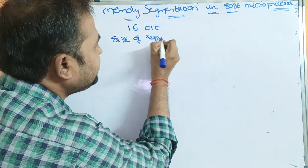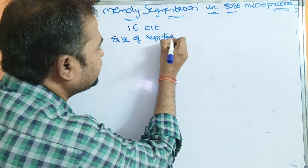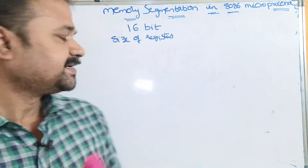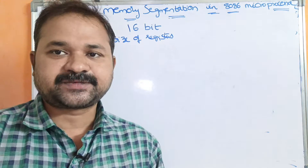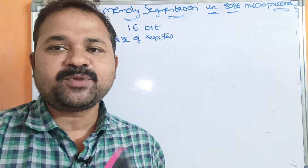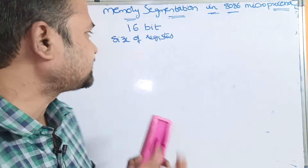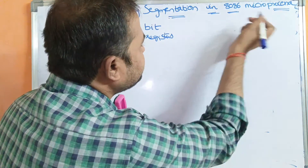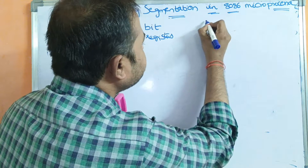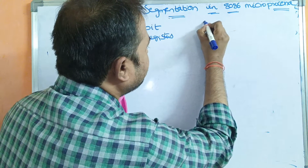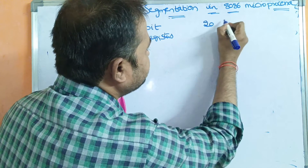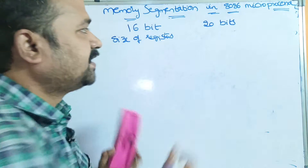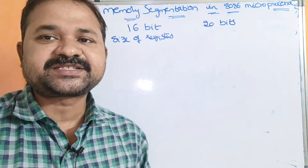Whereas in the 8085 microprocessor, the size of each register is 8 bits. Now let us discuss about the address bus. In the 8086 microprocessor, the address bus uses 20 bits.